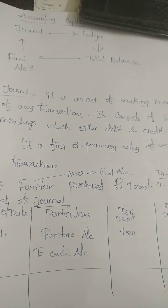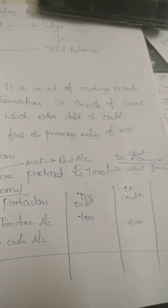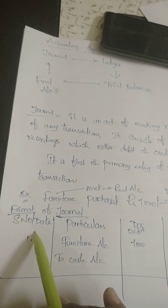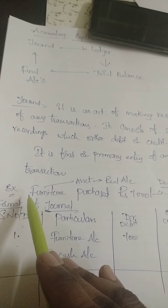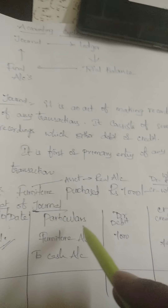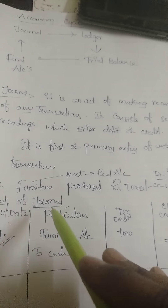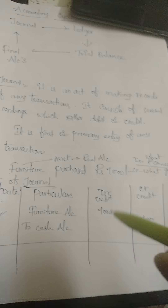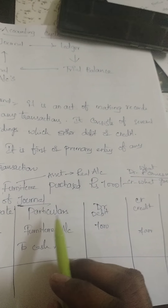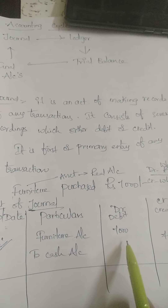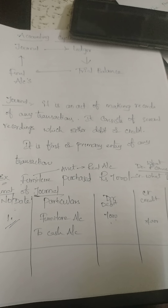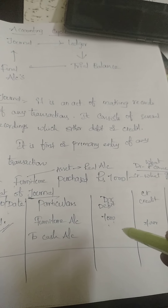For example, furniture purchased for 7,000 rupees — furniture is an asset, which comes under the real account. In the journal entry format, the serial number or date is written first. Then 'particular' — furniture purchased means we are receiving furniture, so we write 'Furniture Account' and debit the amount of 7,000. We write the debit information first as per the proforma of journal entry, and credit information second.